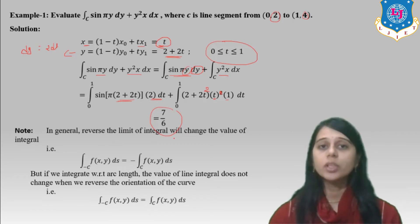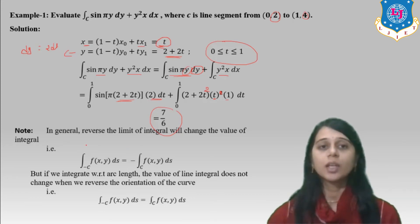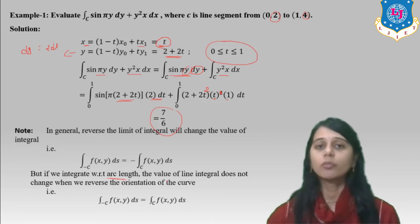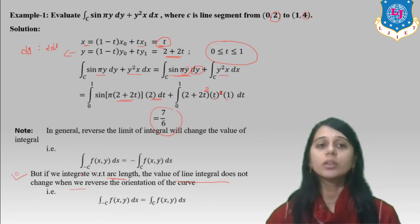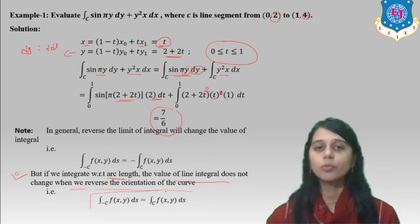In general, reversing the limits of the integral will change the value of the integral. That means the integral over −C of f(x,y) ds equals minus the integral over C of f(x,y) ds. However, if we integrate with respect to arc length, the value of the line integral does not change when we reverse the orientation of the curve. This is an important note.